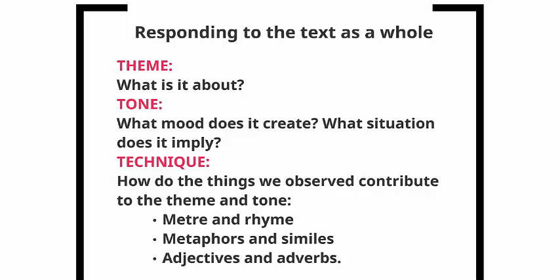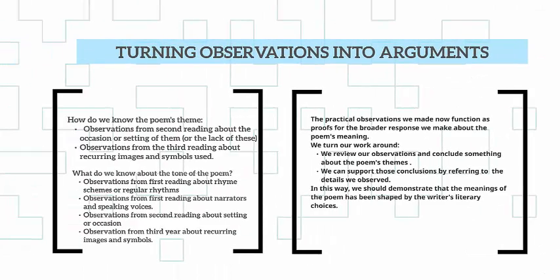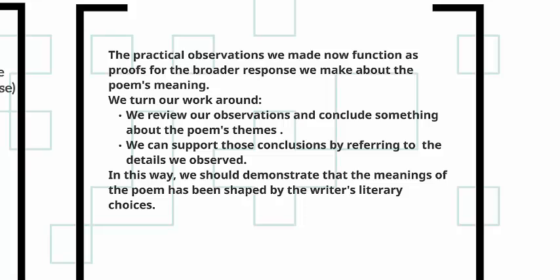We can build up these images because we have looked at the techniques the poet has used — the metre and rhyme, the metaphors and similes, and the use of adjectives and adverbs. What we can now do is turn the observations we've made into an analysis of the poem. The practical observations function as proofs for the broader response we're going to make about the poem's meaning. We review the observations and conclude something about the poem's broader themes and tone, then support those conclusions by referring to the details we've observed, demonstrating that the poem's meaning is shaped by the choice of words, rhythm, and rhyme.